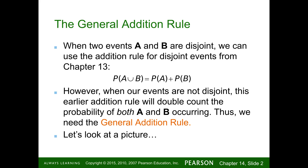The general addition rule: you have two events, A and B, that are disjoint. We can use the addition rule for disjoint events — this is what we covered last chapter. The probability of A or B occurring is the probability of A occurring plus the probability of B occurring.